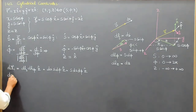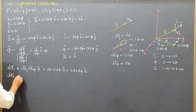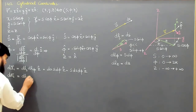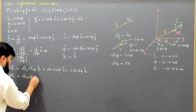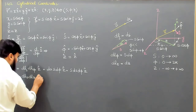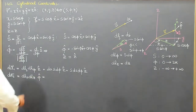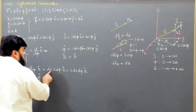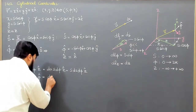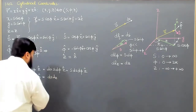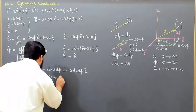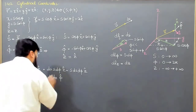Similarly, we can have area element DA2, and it will be DLs and DLz, giving DLs and DLz in the φ unit vector. So we can write for DLs we write ds, and for DLz we write dz, so this will be equal to ds dz in the φ unit vector.